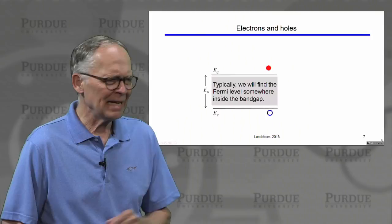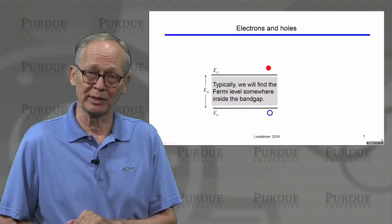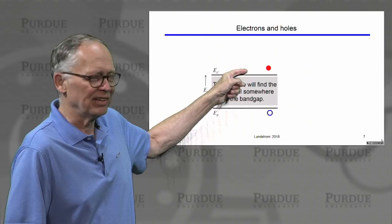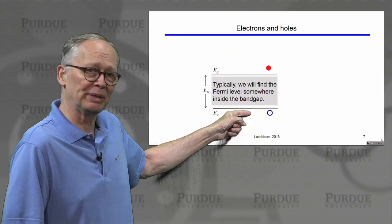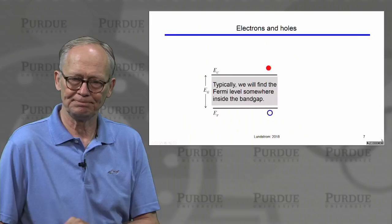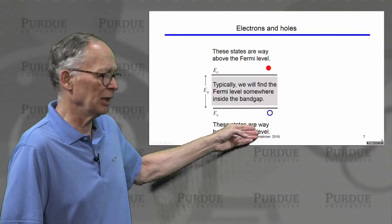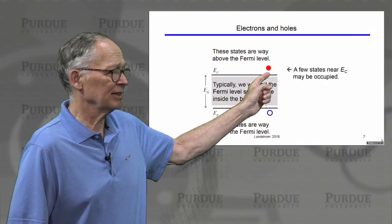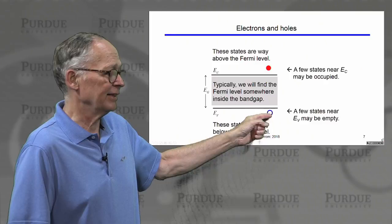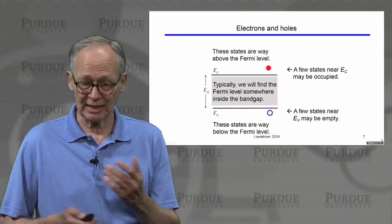Typically we ask: given a semiconductor, where is the Fermi level? We generally find it somewhere inside the band gap. For a very heavily doped n-type semiconductor it might move a little ways into the conduction band; for a very heavily doped p-type semiconductor it might get into the valence band, but generally it's somewhere in the gap. States way up in the conduction band above the Fermi energy will be empty; states deep in the valence band will be filled. Right near the bottom of the conduction band there's a small probability some states might be filled, and near the top of the valence band some states might be empty — that's what gives rise to holes and electrons in a semiconductor.